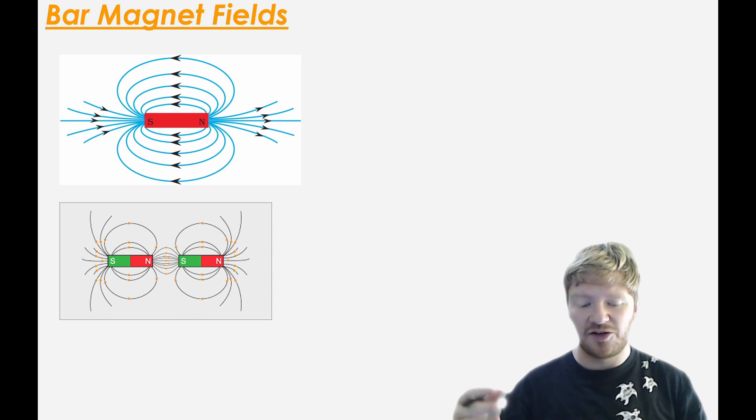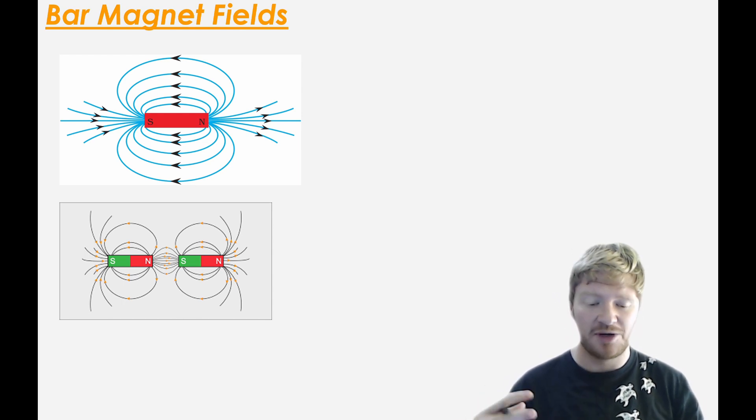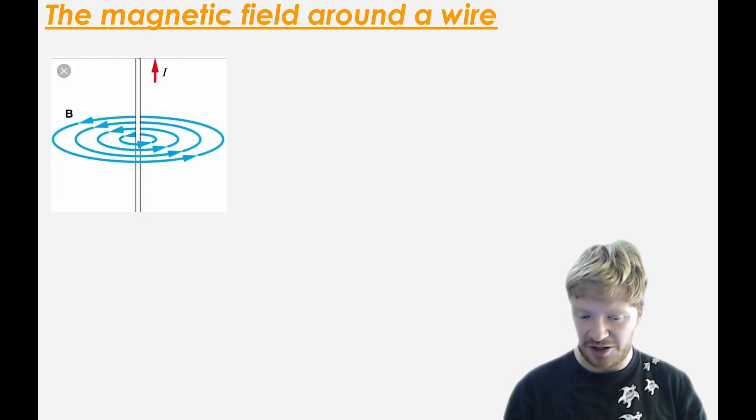So we know that this is the field line, the field pattern around a bar magnet. We'll do an experiment where I show you how to actually find these field lines. But you should be fairly familiar with them.